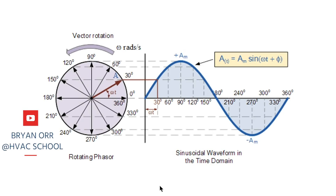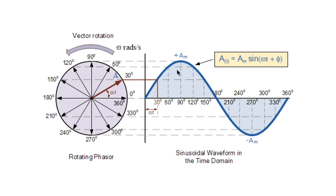I wanted to do a quick video on frequency, which relates to alternating current. In direct current, we don't have frequency, but this is one of the most misunderstood portions of electrical theory. I really don't want to do theory — instead, I want to talk about the practical side. I did a lot of training on this in Haiti with little kids, and I found some metaphors that I think work pretty well.